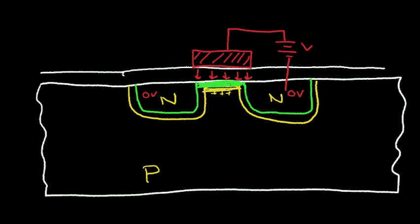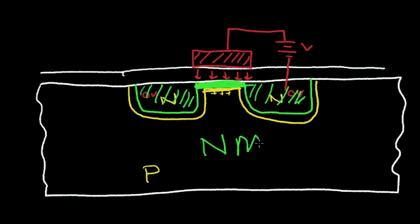So, we see that this depletion region is related to how this MOSFET transistor behaves. When this region inverts and becomes an N-type region, I have a conduction path from one N region to the other through the region underneath the gate electrode. This is an NMOS transistor, and we'll talk more about this in future videos. I just wanted to give you an overview of how important this depletion region is — it's important for a diode, for a bipolar transistor, and for MOSFETs such as NMOS and PMOS transistors.